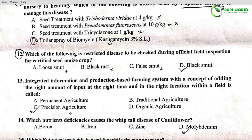Question 12: Which of the following is a restricted disease to be checked during official field inspection for certified seed maize crop? Options: Loose smut, black rust, false smut, black smut. The correct answer is black smut.